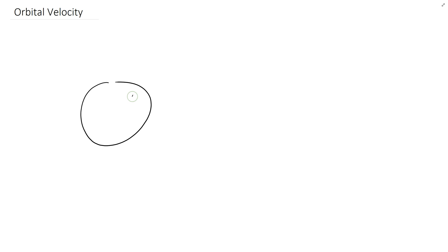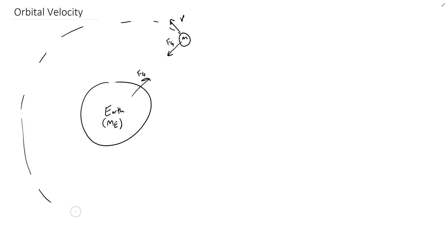We're going to talk about orbital velocity. When we talked about the universal law of gravitation, we talked about objects that have a force of gravity attracting them. Think about the Earth and the Moon. The Earth has a mass of m_e and the Moon has a mass of m. The force that attracts the two doesn't do much to the Earth — it just makes the Earth wobble a little bit. For the Moon, that force acts as a centripetal force, because the Moon has a forward velocity that it completes its orbits with. We call that the orbital velocity, and the centripetal force that is always changing the direction of that velocity is the force of gravity.